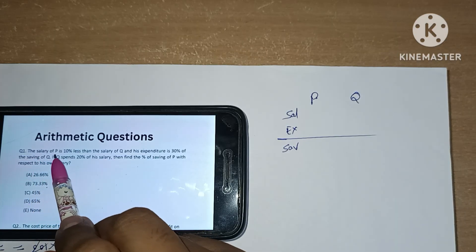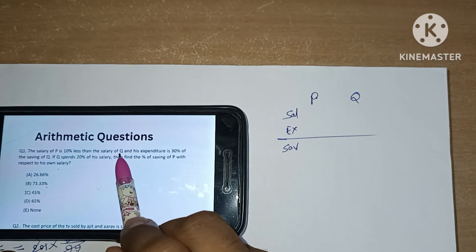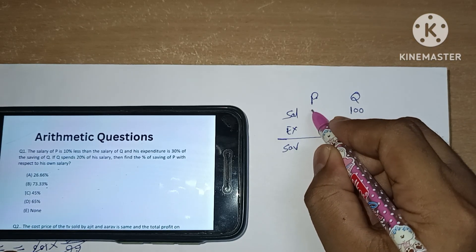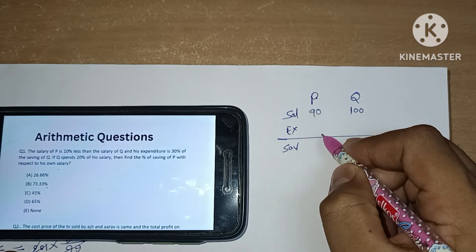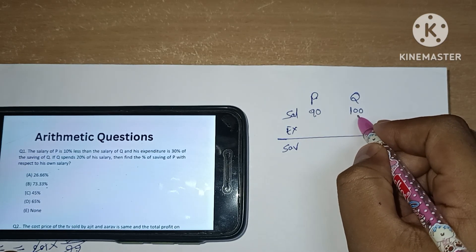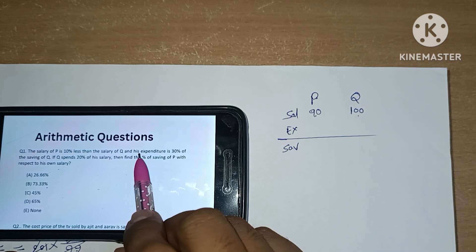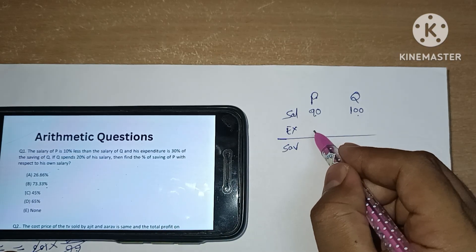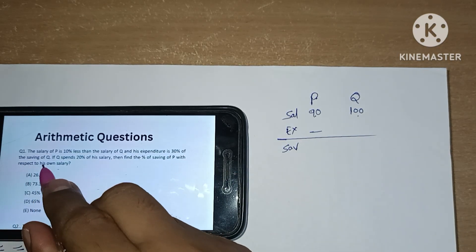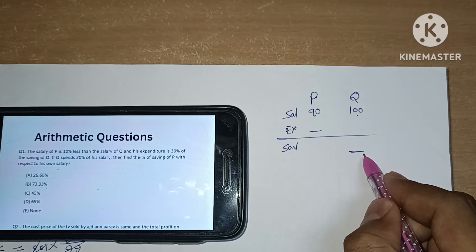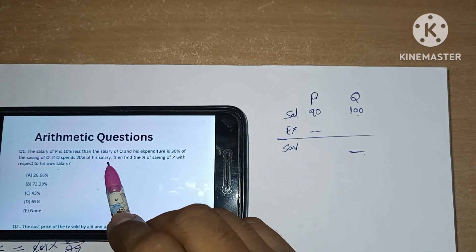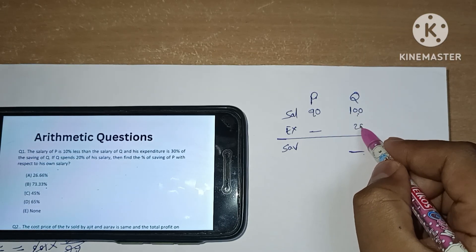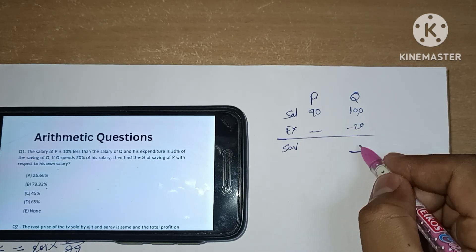The first statement says the salary of P is 10% less than the salary of Q. Let's take 100 as the salary of Q — 10% less for P means 90. So salary of P is 90 and salary of Q is 100. P's expenditure is 30% of the savings of Q. If Q spends 20% of his salary, his savings will be 80.